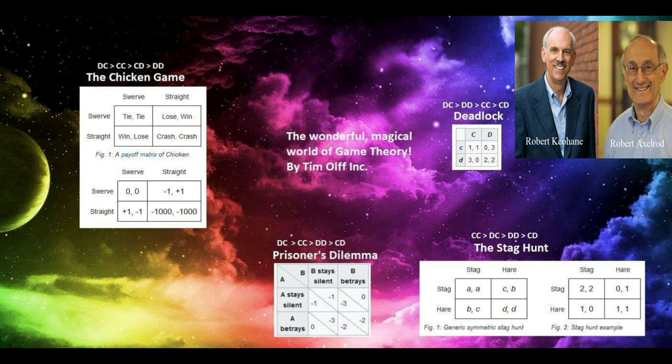The context of interaction shapes how and why states cooperate. International institutions — appearing as international organizations but also as international modes of interacting — define this context. They alter the payoff structure, lengthen the shadow of the future, and enable games with large numbers of players to be broken down into games with smaller numbers of actors. Different games affect one another while political issues are linked, and the outcomes of one game affect the outcome of another. This is called a multi-level game.